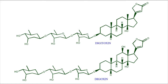Digoxin is the preferred cardiac glycoside worldwide, but digitoxin is commonly prescribed to adults in Norway. Digitoxin has a half-life of five to seven days compared to one to two days for digoxin. Digitoxin is extensively metabolized by the liver before excretion, while digoxin is excreted mainly unaltered by the kidneys.